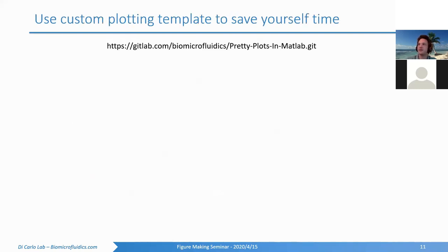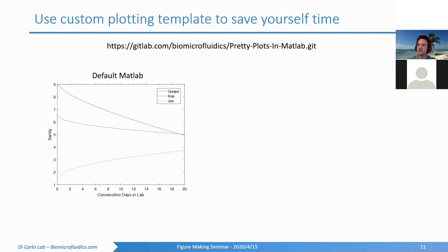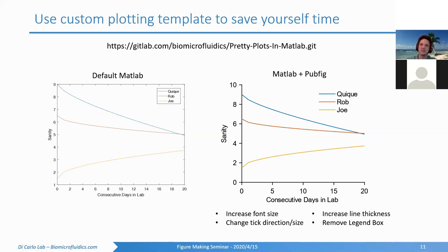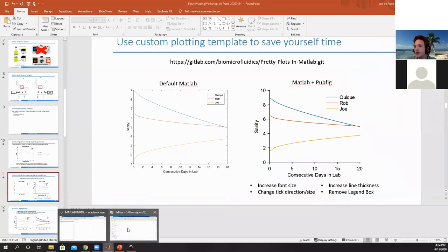I have functions built in MATLAB on our GitLab — I have one called 'pub_fig', basically a function that makes publication figures. When you run it, it increases the font size so you can have a plot that doesn't take up much space but is still easy to understand. It changes the tick direction and size, and a lot of things are up to preference. I don't like having a legend box, so I removed that. It also increases the line thickness.